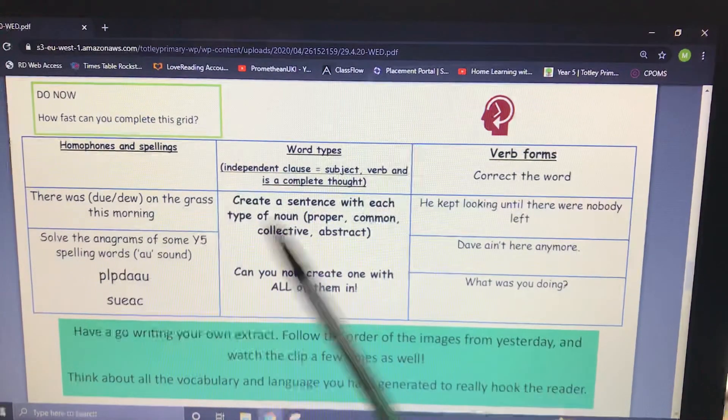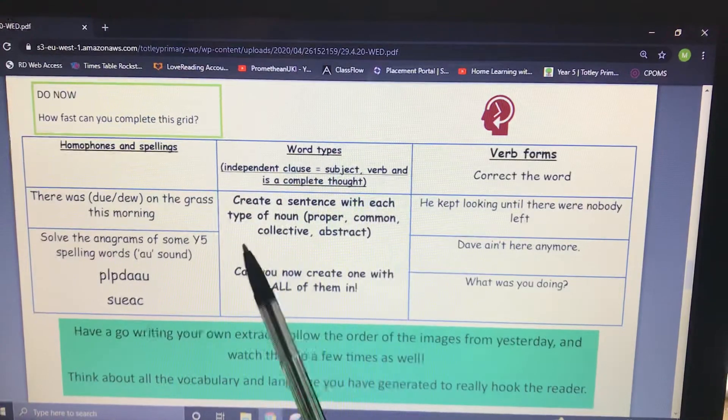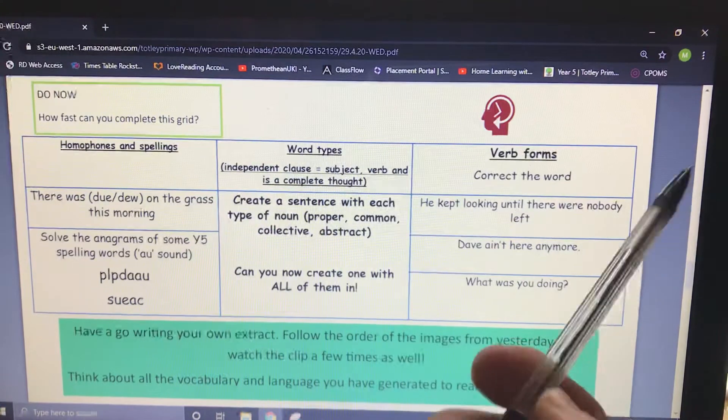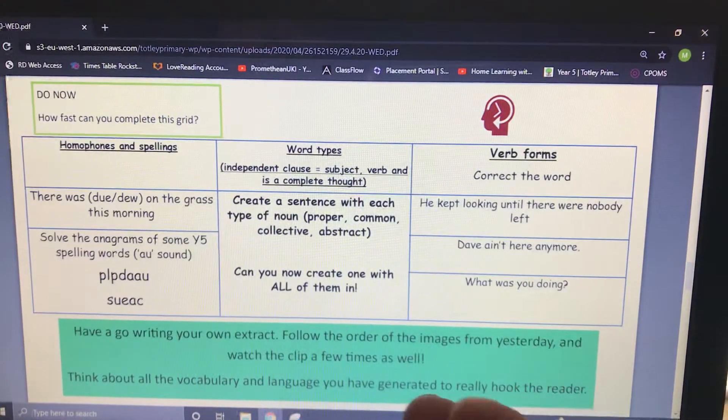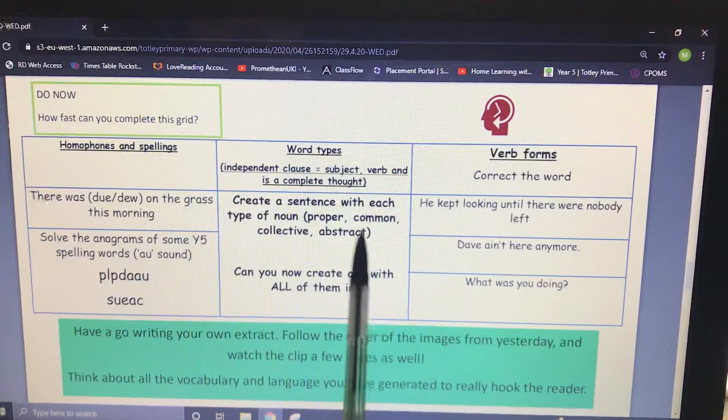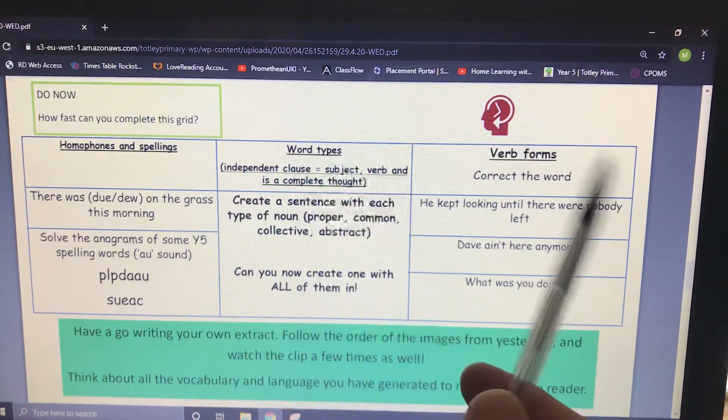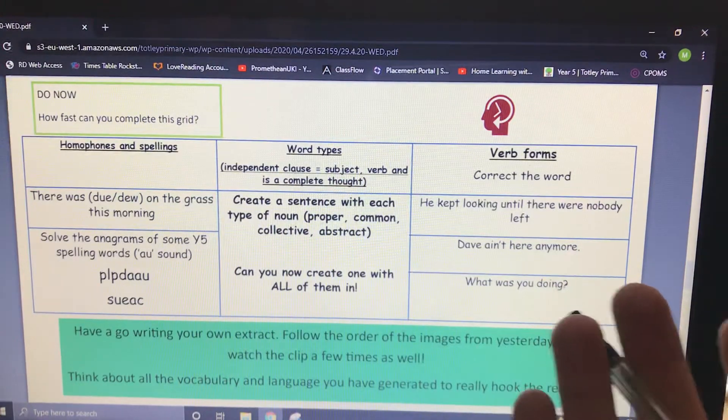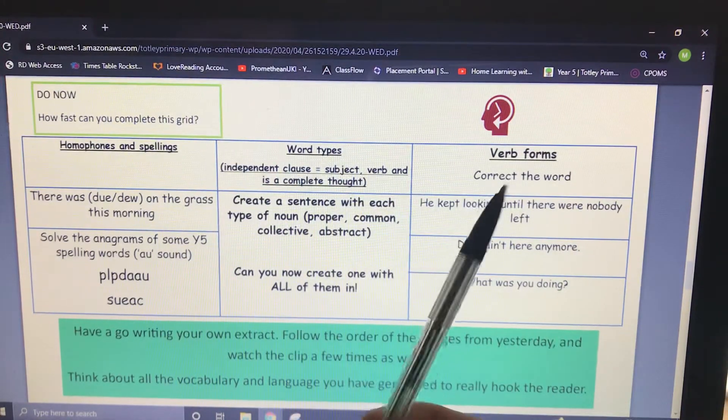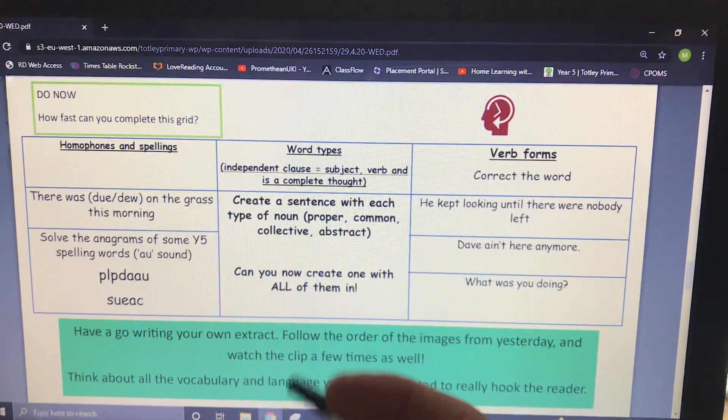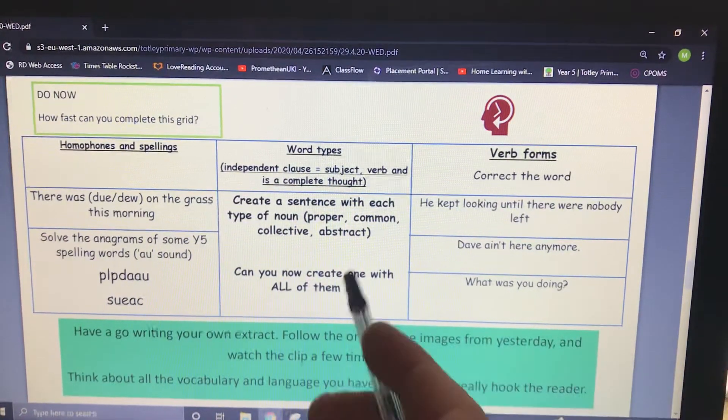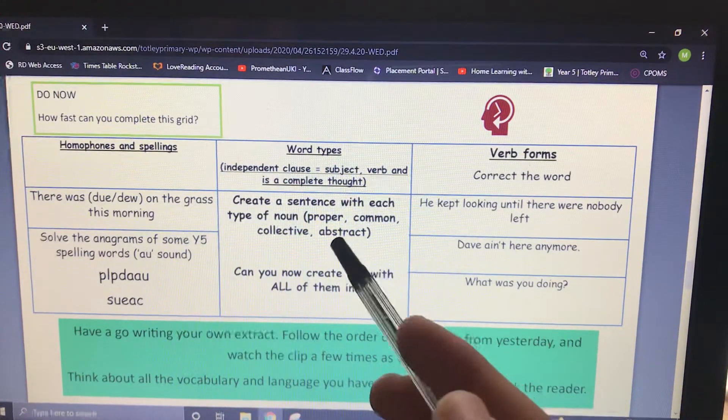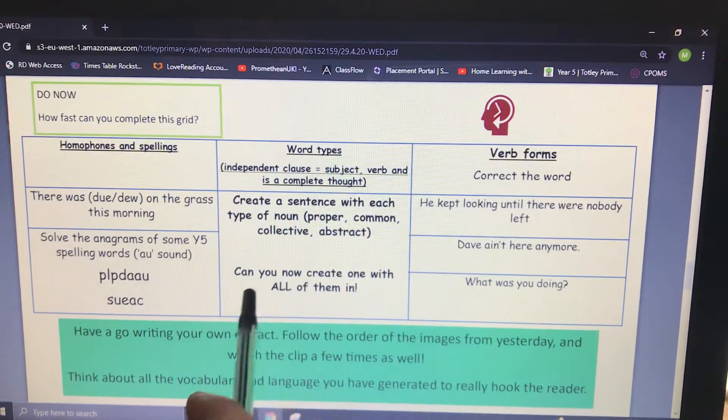Word types. So we've been looking at different nouns. Create a sentence with each type of noun. A proper one: Mr. Cooper is quite enjoying doing videos. Common: The flower is yellow. Collective: I've dropped my pack of cards. And then abstract: I've woken up and I feel hungry.